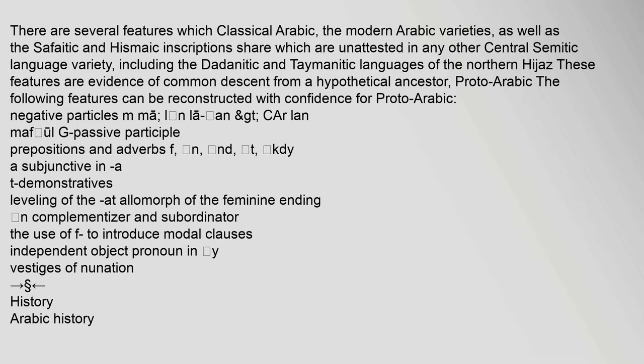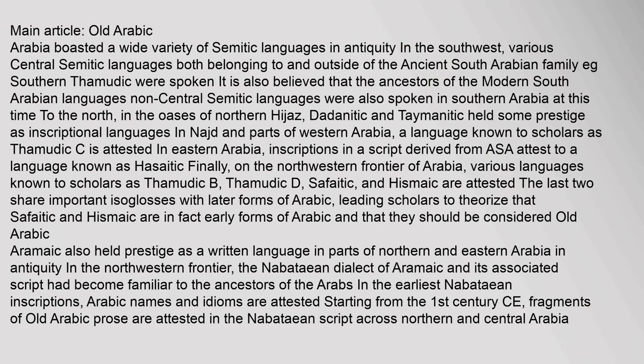There are several features which Classical Arabic, the Modern Arabic varieties, as well as the Seifetic and Hismaic inscriptions share, which are unattested in any other Central Semitic language variety, including the Dadanitic and Tamanitic languages of the Northern Hiyas. These features are evidence of common descent from a hypothetical ancestor, Proto-Arabic. Arabia boasted a wide variety of Semitic languages in antiquity. In the southwest, various Central Semitic languages both belonging to and outside of the ancient South Arabian family were spoken.